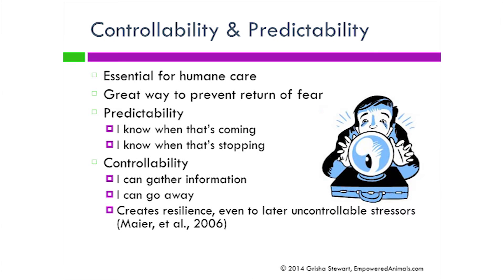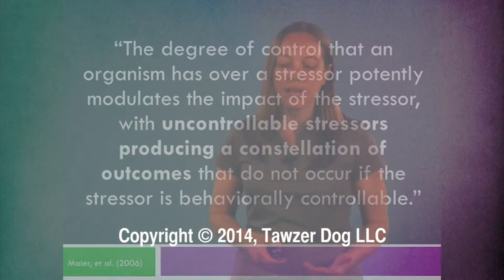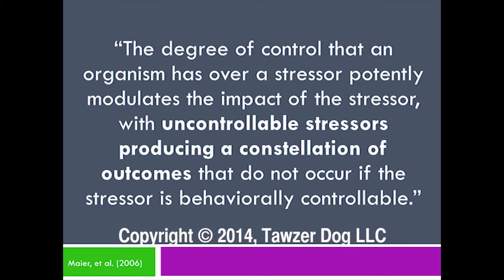Controllability means the dog knows they can gather information — their behavior has an effect. They can go away if they want to. It creates resilience to have controllability, even in the face of an event that happens later that's uncontrollable. So even though dogs can't always leave or always control a situation, the more control they do have, the more resilient they'll be facing some uncontrollable stressor. Uncontrollable stressors definitely produce a constellation of negative outcomes for the health and general well-being of the dog.